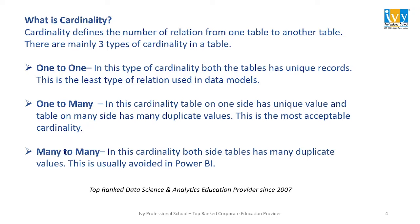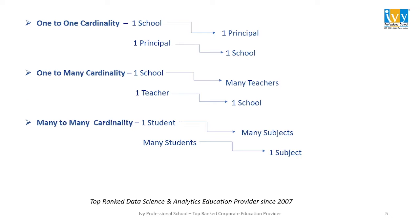The first is one-to-one. In this type of cardinality, both tables have unique records. This is the least common type of relationship when we are building data models. For example, one school has one principal, and similarly one principal can manage only one school at a time. So this is a one-to-one relationship.